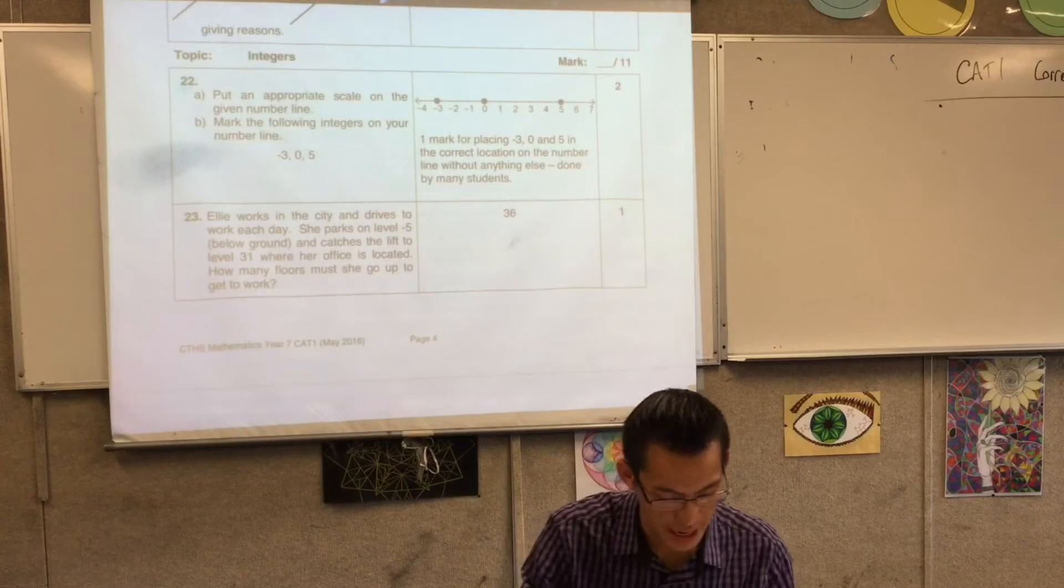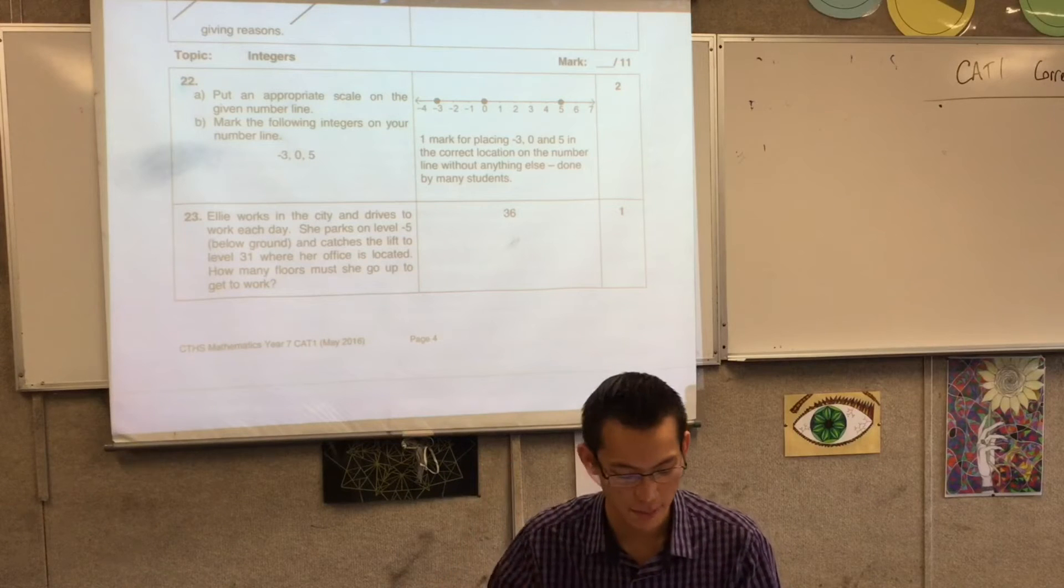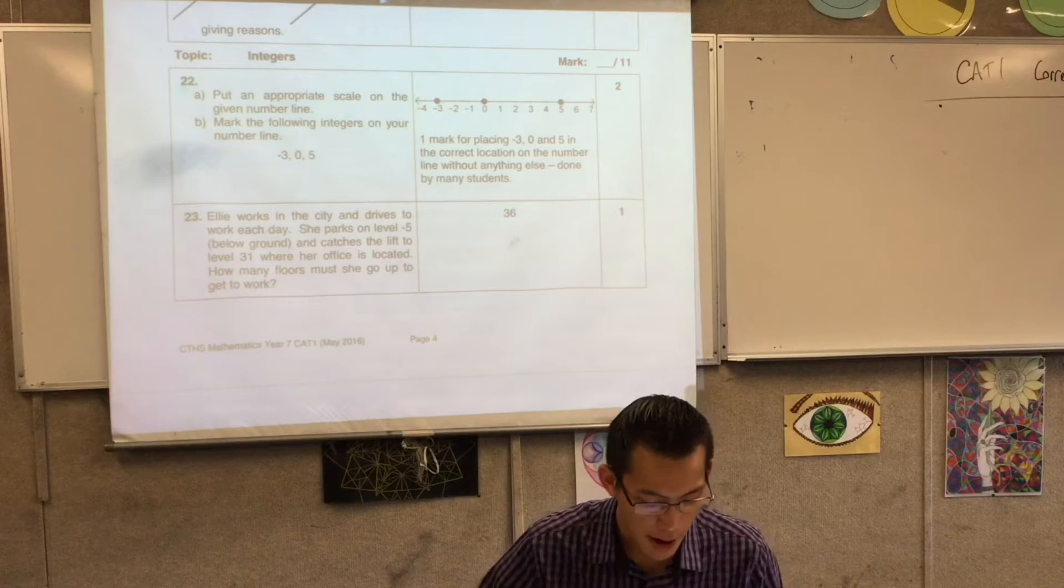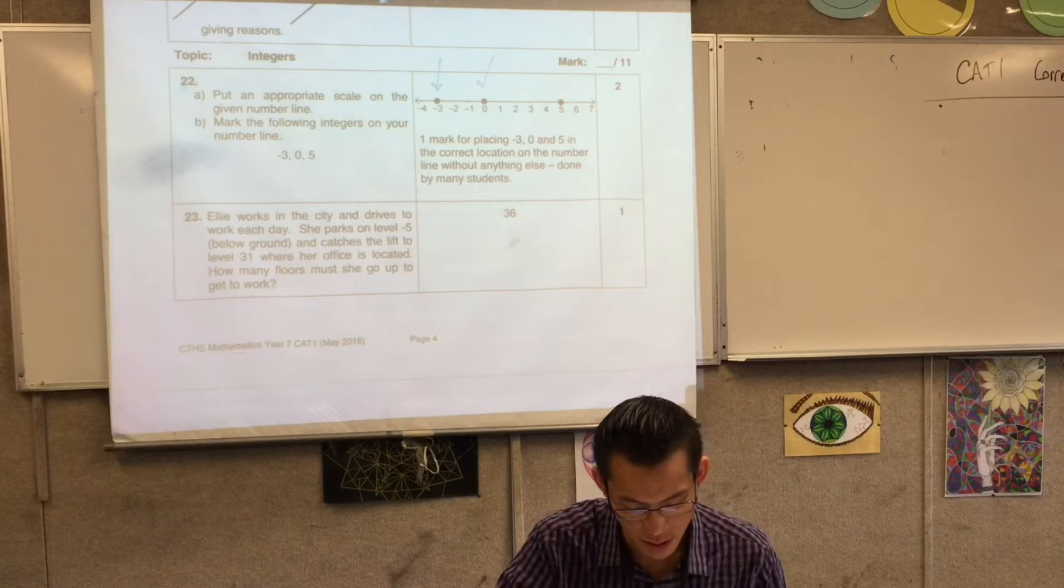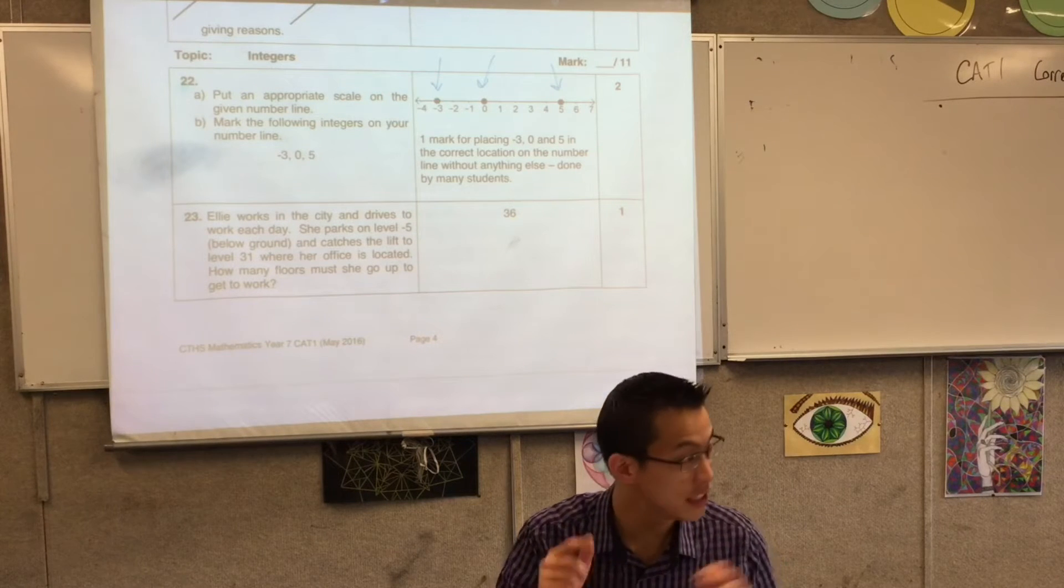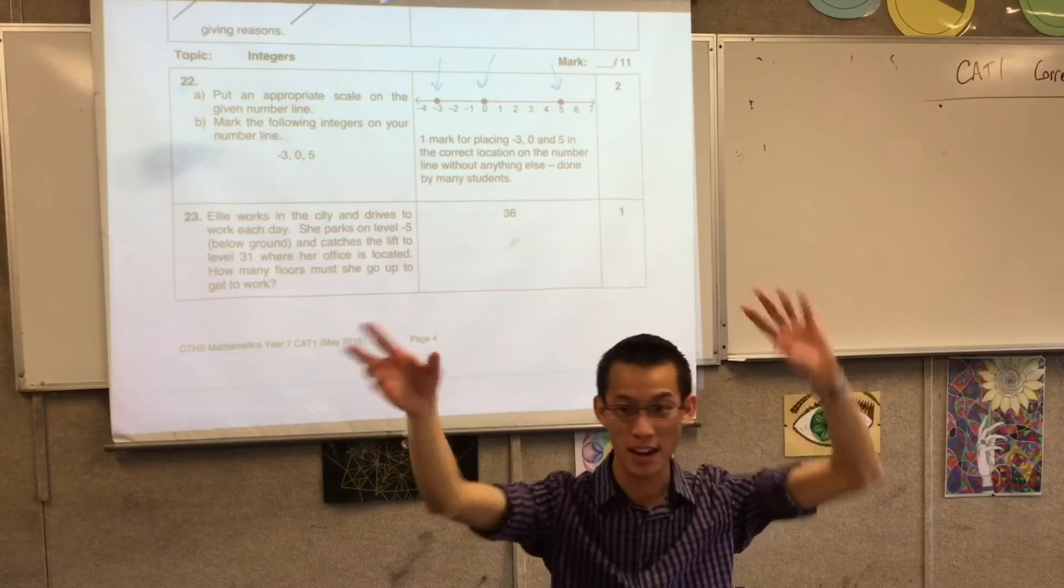Question 22, we're into integers now. Put an appropriate scale on the given number line, so we're expecting something like that. Mark the following integers, and we did examples of this. You can see those big marks there which clearly show on the number line, not above, not below, not floating around, but on the number line where the numbers are.